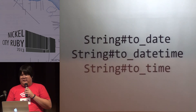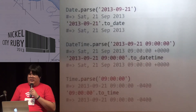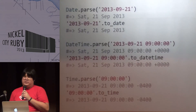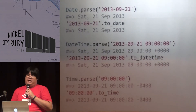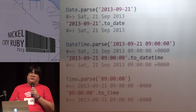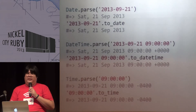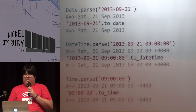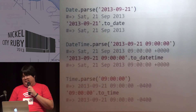And if there's a new date string, you can call today dot to_time to actually convert the string into a DateTime or Time object.